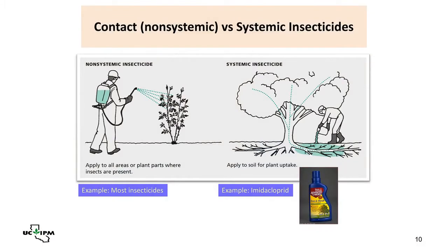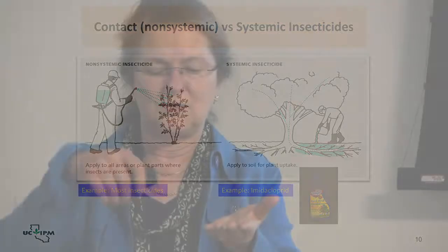For insecticides, the concept of contact versus systemic also applies. Most insecticides we use are contact insecticides, so the bug needs to directly contact the product. You have to get good coverage on the leaves. If an insect is feeding on the underside of a leaf and you only treat the upper side, it's possible the insect won't be affected. Good coverage is required.